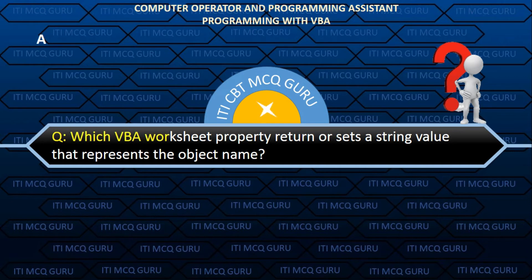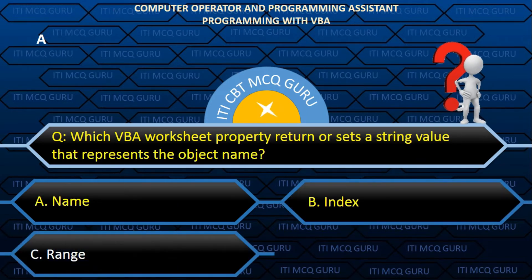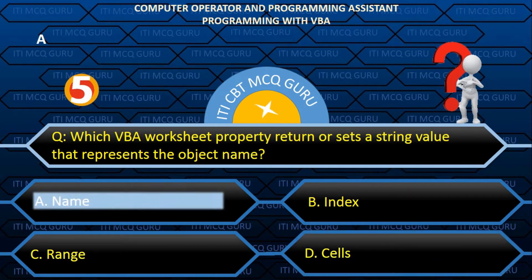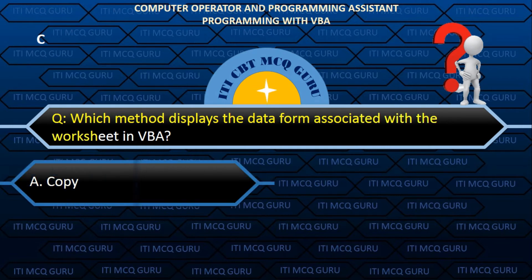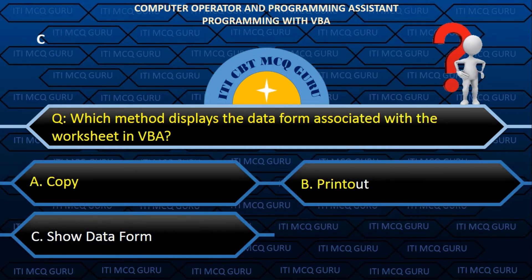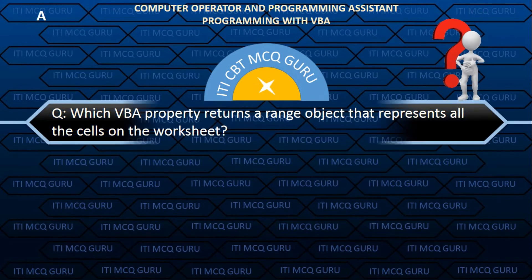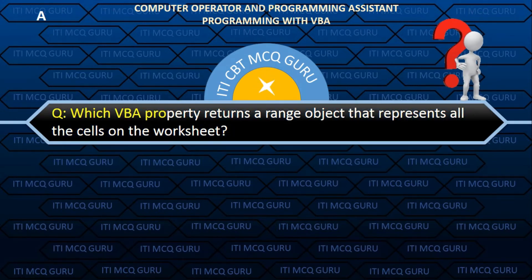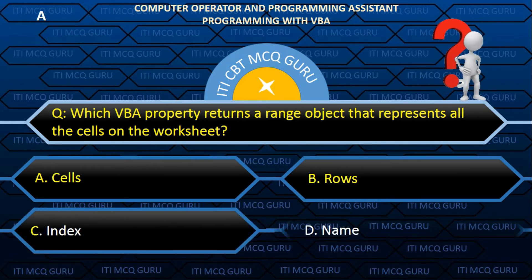Which VBA worksheet property returns or sets a string value that represents the object name? Answer: D. Name. Which object represents all the cells on the worksheet? Answer: A. Cells.